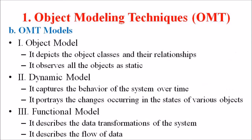The second component is the OMT model, which has three subclasses. First is the object model, second is the dynamic model, and third is the functional model. The object model depicts the object classes and their relationships as a class diagram, representing the static structure of a system — it observes all objects as static and does not pay attention to their dynamic nature. The dynamic model captures the behavior of a system over time, the flow of control, and events in the event trace diagram and state transition diagram.